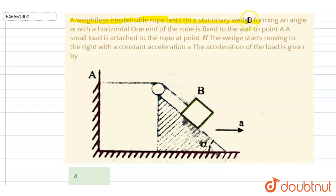Hello everyone. A weightless inextensible rope rests on a stationary wedge forming an angle alpha with the horizontal. One end of the rope is fixed to the wall at point A, and a small load is attached to the rope at end B. The wedge starts moving to the right with a constant acceleration a. The acceleration of the load is given by: